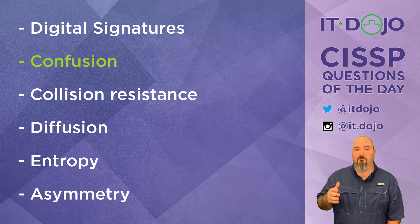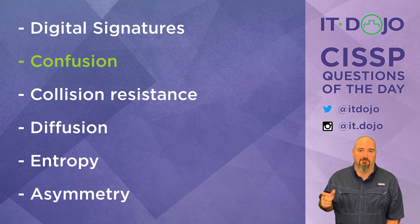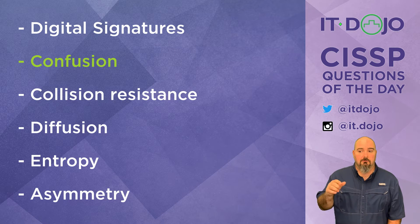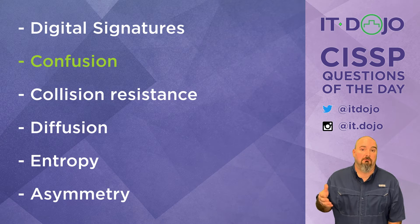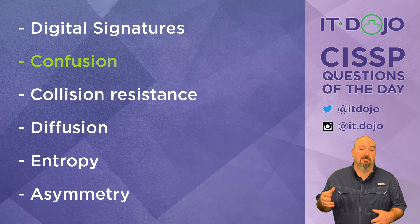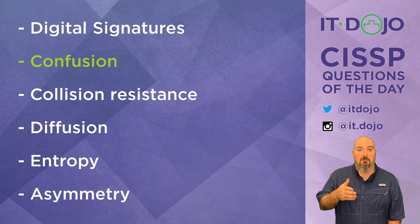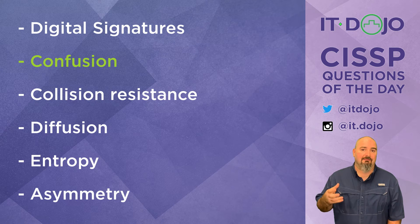Most books and internet sources say that diffusion dissipates the redundancy of the plain text across the ciphertext. Basically, in the English language we have 26 letters used to form words, and those letters and words aren't used equally — some appear more often, and certain patterns mean one letter predicts another. For instance, in English, Q is almost always followed by U. These create redundancies in our data that allow an attacker to make educated guesses about what the data might be.